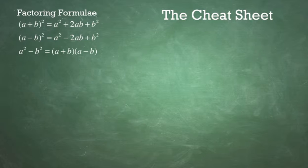A plus B all squared equals A squared plus 2AB plus B squared. A minus B all squared equals A squared minus 2AB plus B squared.